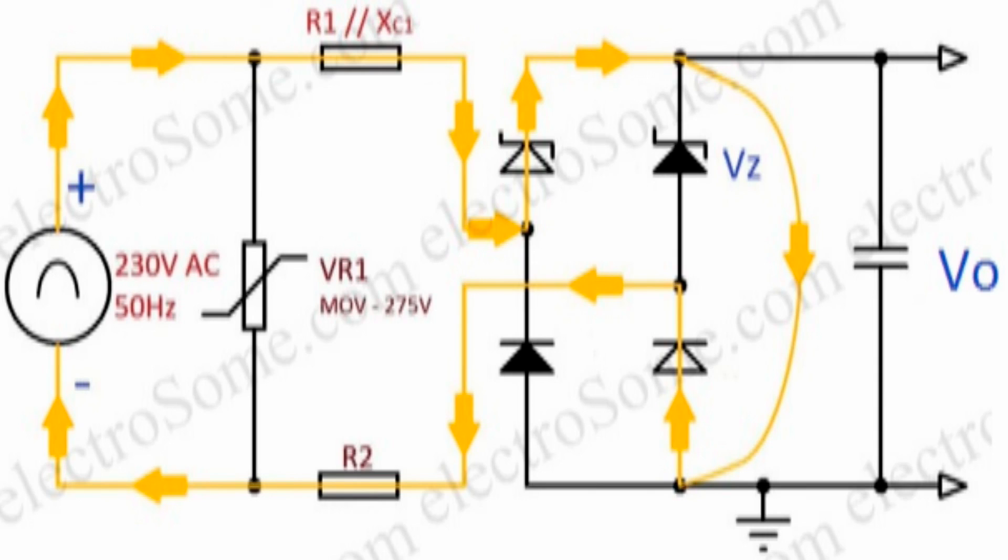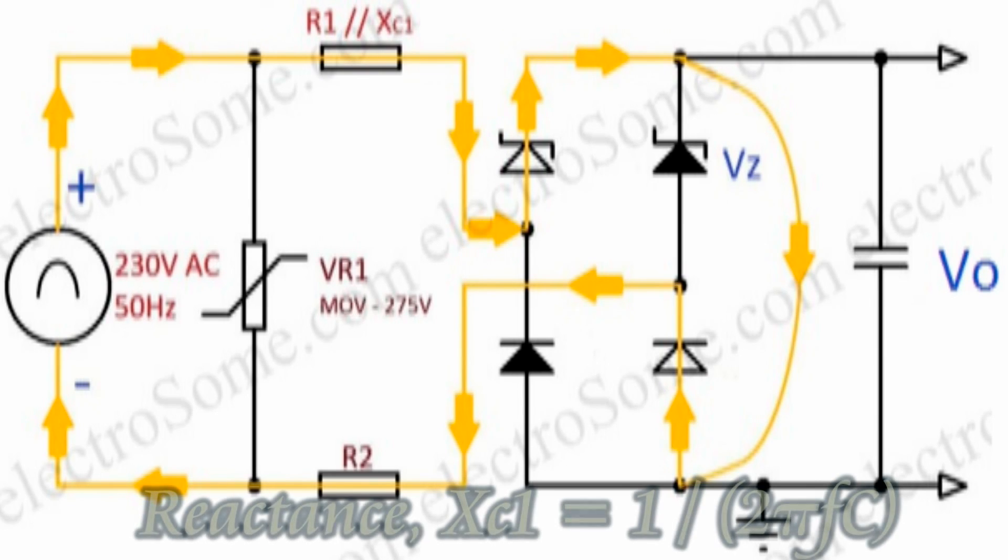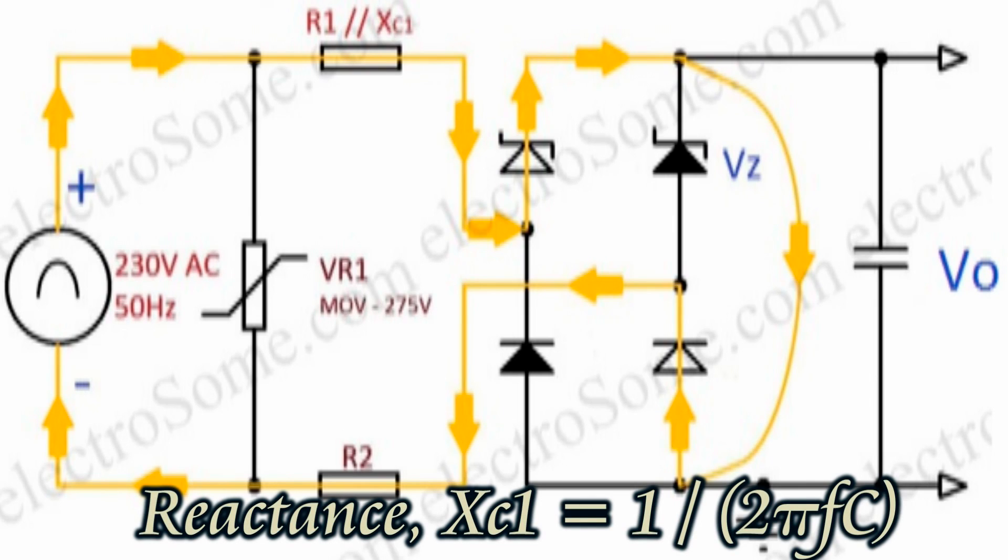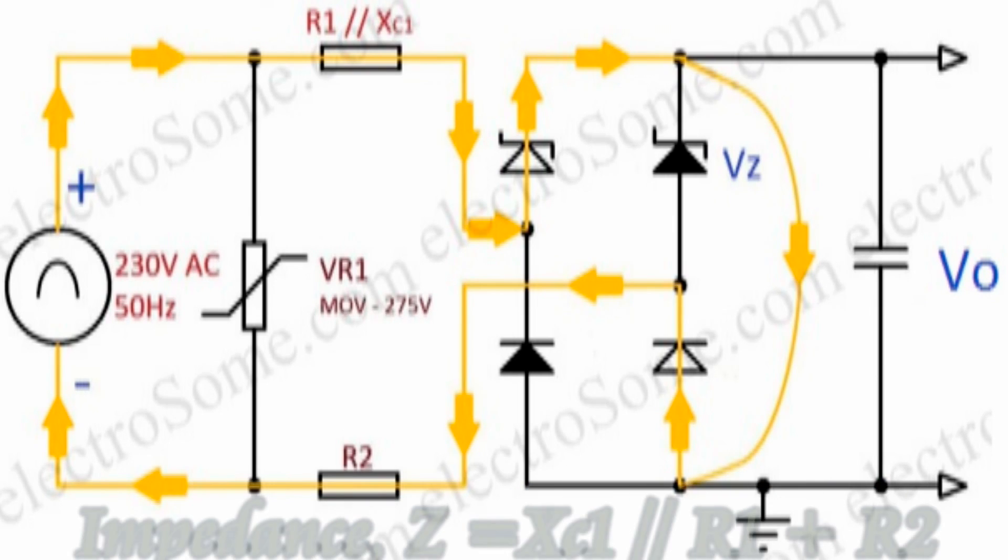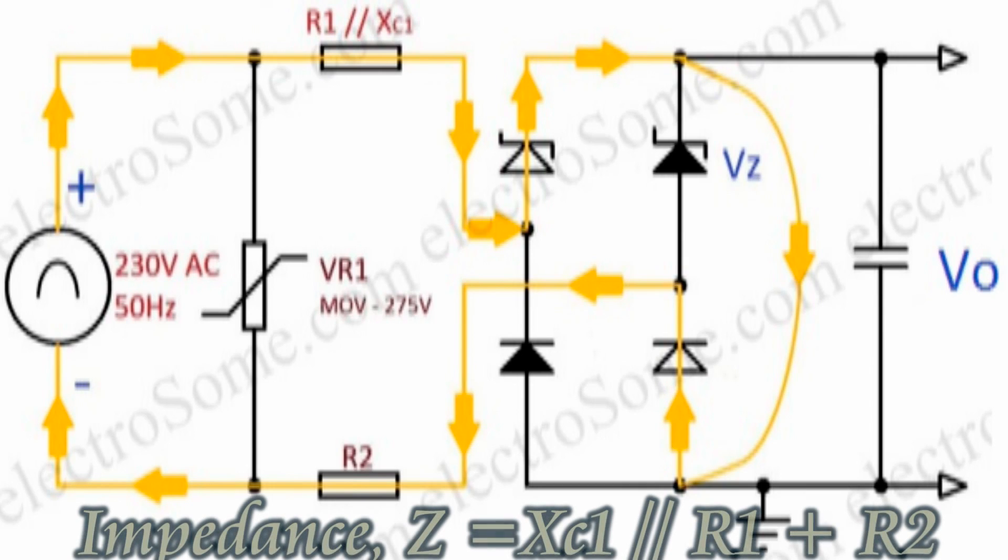Let's discuss the design. We can easily find the values of each component by considering a half cycle, and using KVL and Ohm's law. Capacitive reactance is given by 1/(2πFC), where F is the frequency of AC input. We can find the total impedance by using the values of R1, R2 and C1.